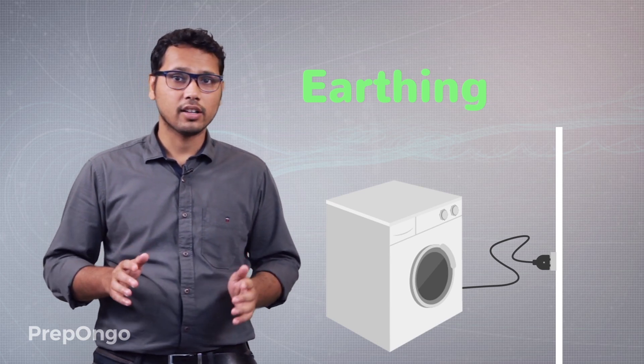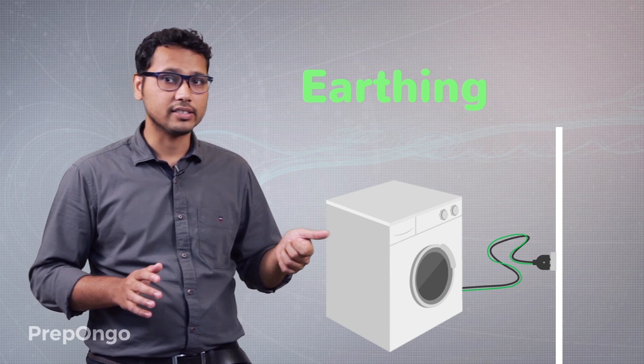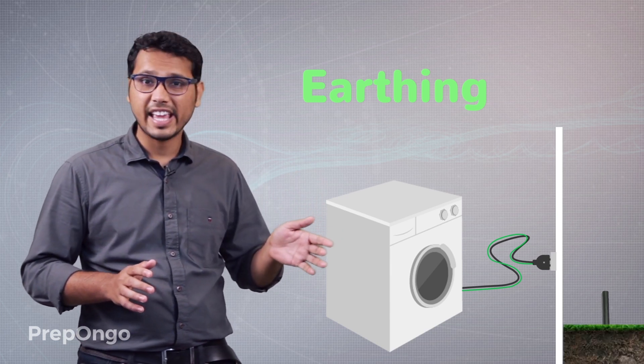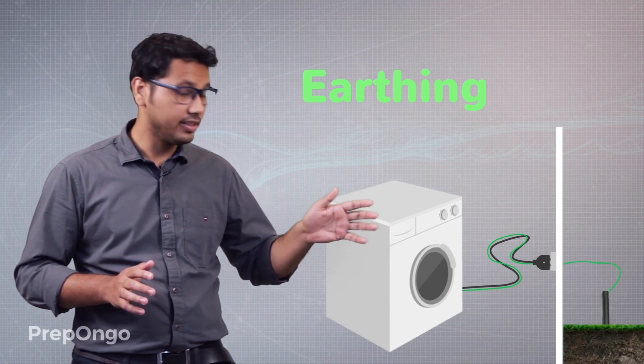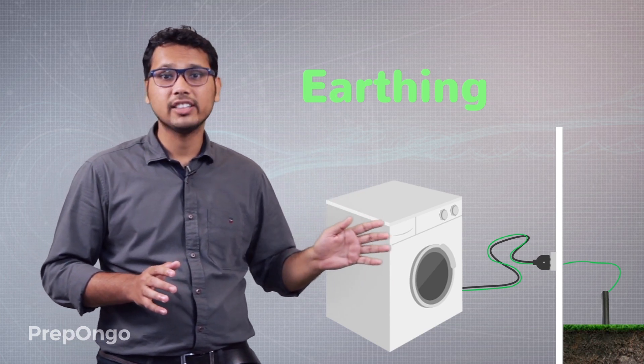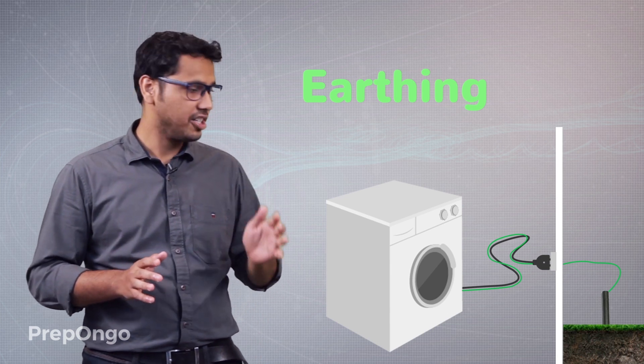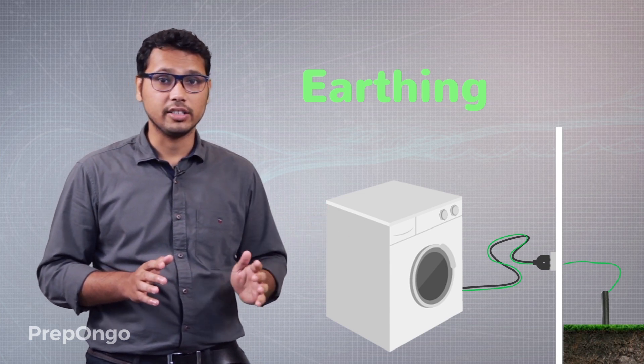Now to ensure it, a wire is connected to the metallic surface of that appliance and that wire is taken into the earth by digging a hole in the earth and filling the hole with salt. This is to ensure that we get an alternative pathway for the current to go into the earth. Earthing is done for your own safety.